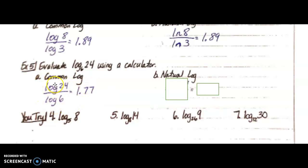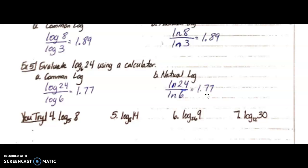Using the natural log, we have the same exact thing, but instead of log, we have ln. So again, ln of 24 over ln of 6. And if you guessed it, you're right, it is equal to 1.77.